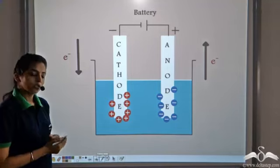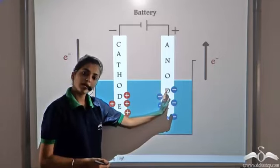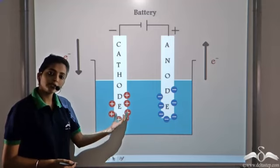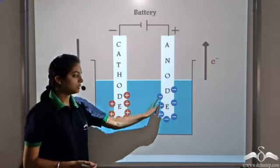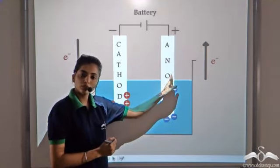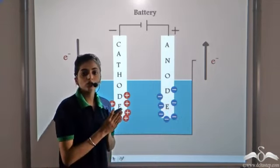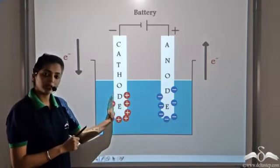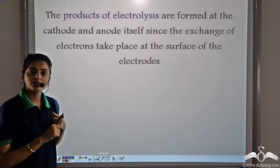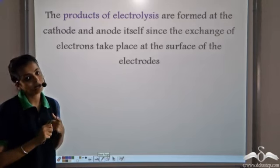The cations are discharged at the cathode and the anions are discharged at the anode. The cations become neutral at the cathode and form a product there. Similarly, the anions give away electrons to the anode in order to become neutral, so they are discharged at the anode and their product is formed there. The products of electrolysis are always formed at the cathode and the anode, because the transfer of electrons takes place at the two electrodes.